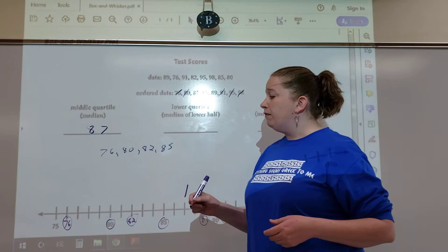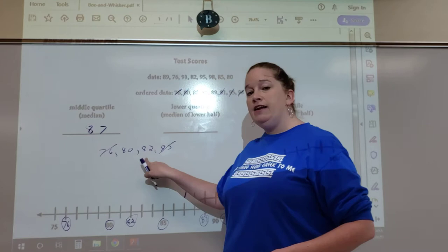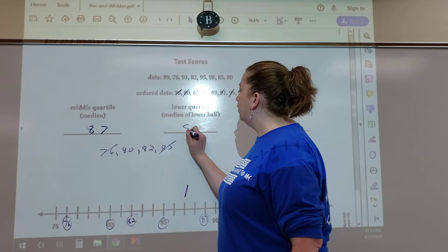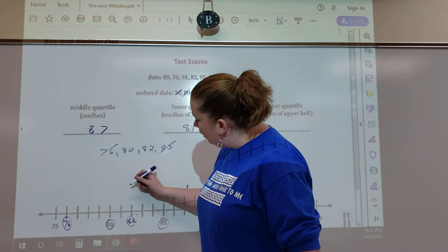Now we have to find the median of those. If we cross them out, we end up with 80 and 82 in the middle. That's pretty easy to find the average: 80 plus 82 divided by 2 is 81. So our lower quartile is 81, and once again we're going to find that number on our number line and draw a little line.